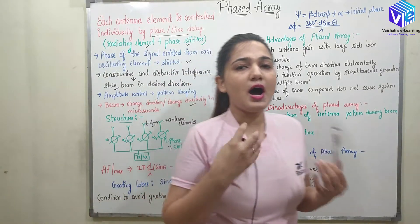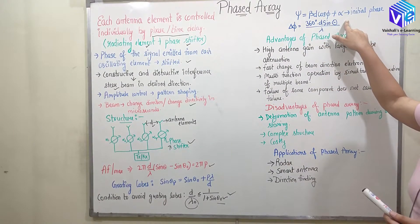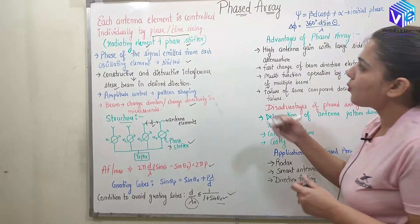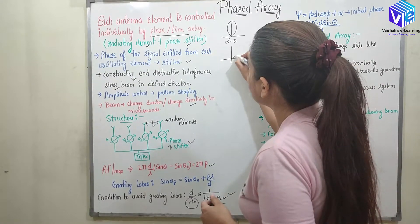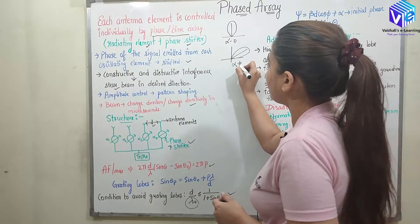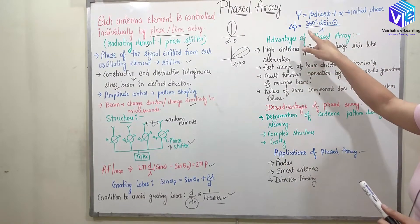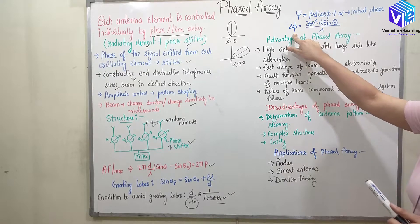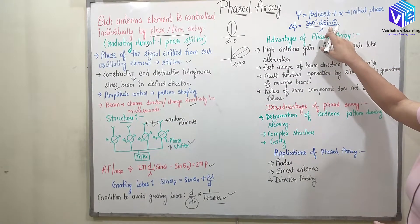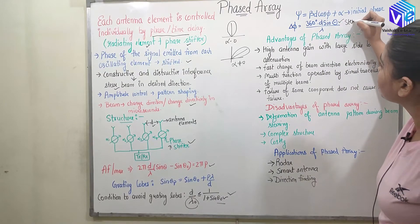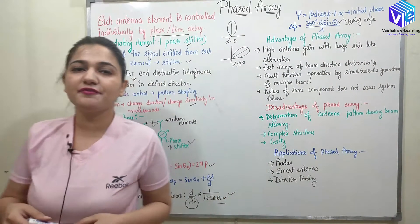Now how is the phase shifting done? We have studied psi in various classes — psi = β·d·cos φ + α, where α is the initial phase. When alpha is 0, the output looks a certain way. When we introduce some alpha — alpha not equal to 0 — the output beam shifts. So with the help of this phase I can shift the output beam. Delta φ is the phase shift, given as 360° × d/λ × sin(θ), where d is the distance between the two elements and θ is the steering angle — the angle at which I have to steer my radiation.